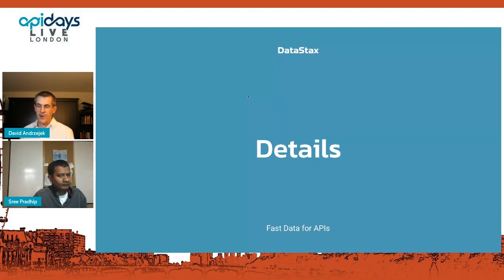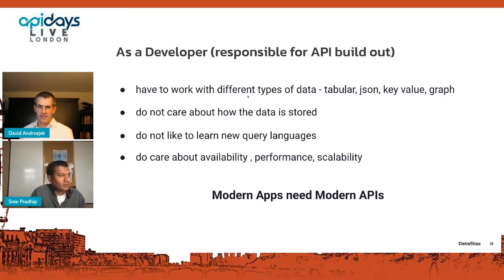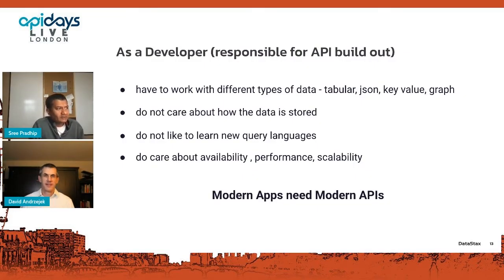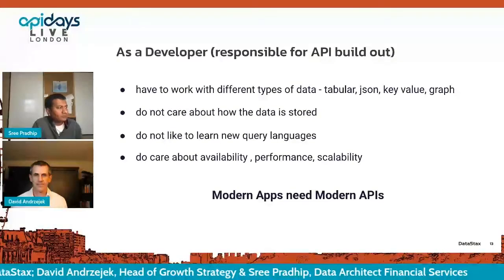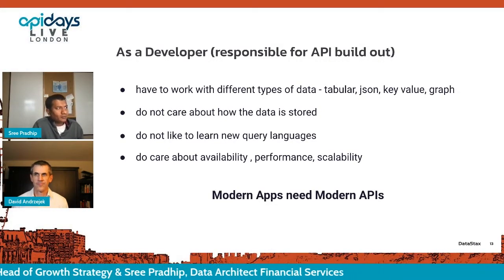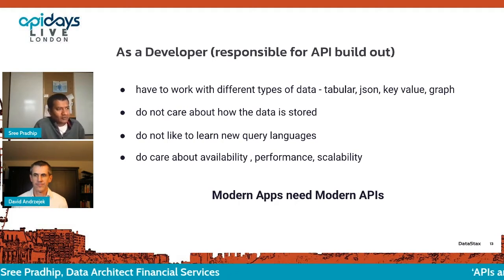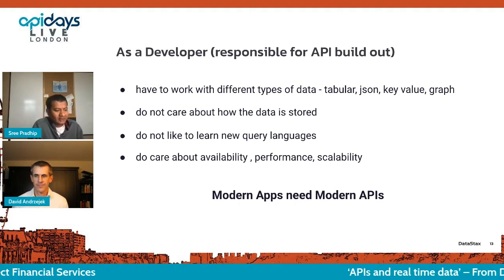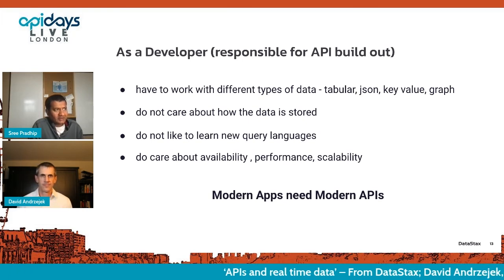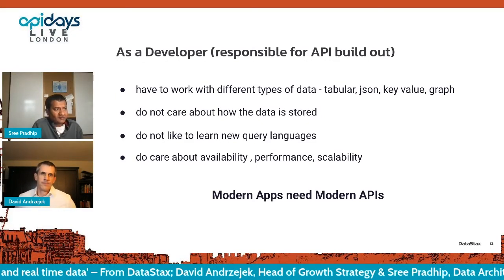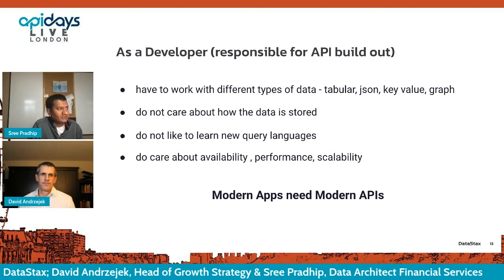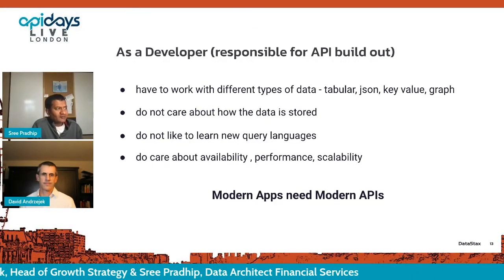Thanks David. If you're a developer producing APIs and responsible for a build-out, there are a couple of things you really have to think about. You have to work with data of different types — getting data and doing round trips through the network where there are processors that are aggregators of data, each storing data in different ways. As a developer, you'll have to figure out how to interact with data that comes in different shapes and sizes.